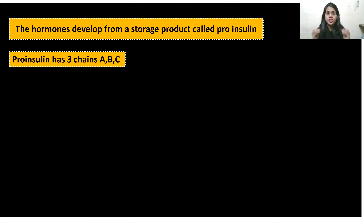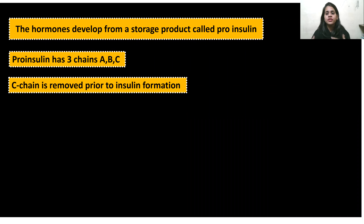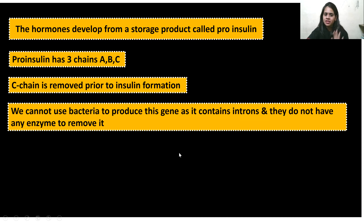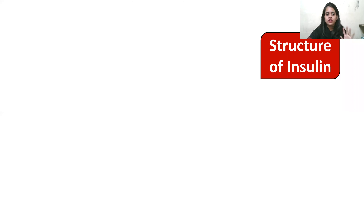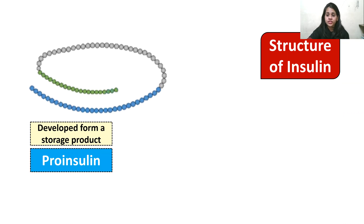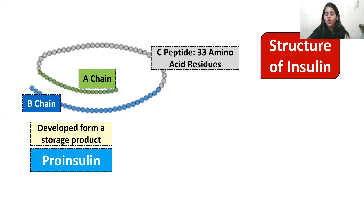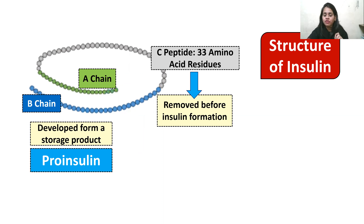Insulin is developed from a storage product in our body called pro-insulin. Pro-insulin doesn't have two chains — it has three: A, B, and C. The C chain is removed prior to insulin formation. While the final product, insulin, is being made, the C chain gets removed, leaving only chains A and B. We cannot use bacteria directly to produce this gene as it contains introns and bacteria do not have enzymes to remove them. The C chain of pro-insulin is itself made up of 33 amino acid residues.